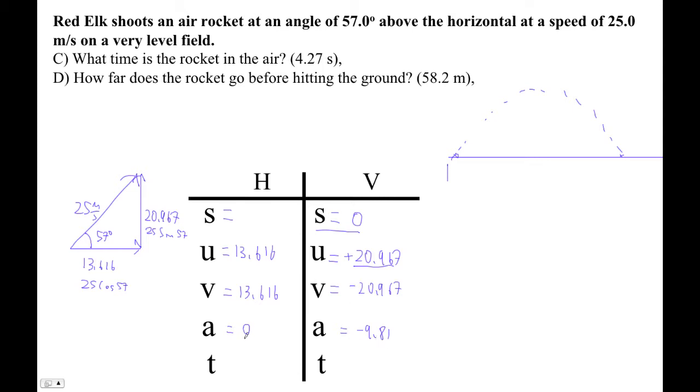We've got the acceleration of gravity. We're not accelerating horizontally. So therefore, this horizontal component, the 13.616, is our horizontal. So what time is the rocket in the air? Well, we could use anything with a T in it. I'm going to use this guy: V is U plus AT.